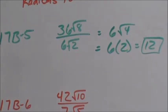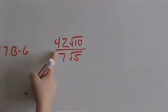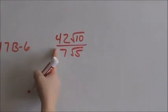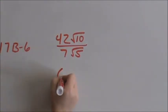On down to 17b number 6. I see that we are dividing numbers and radicals. Numbers to numbers, radicals to radicals. 42 divided by 7 is 6.